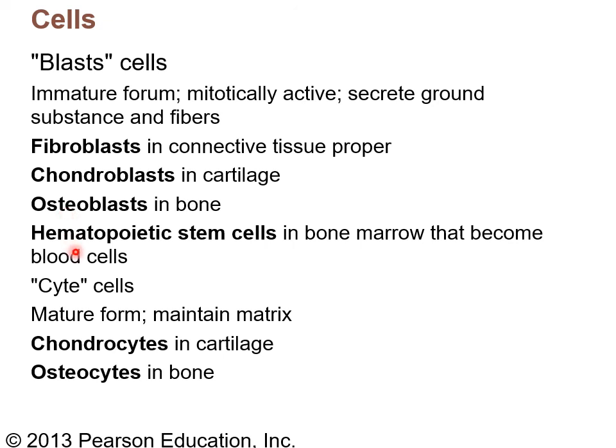For blood, the hemopoietic stem cells — also called hemocytoblasts — give rise to mature blood cells. If they're mature cells they're called cytes: chondrocytes are in cartilage, osteocytes are in bone. Keep those cell names straight for each division of connective tissue because you'll need them for the test.